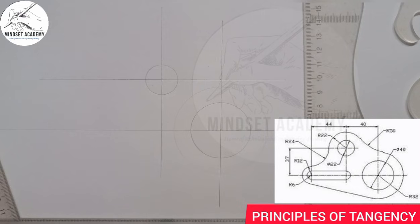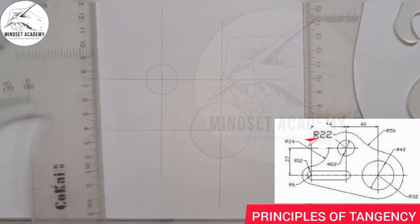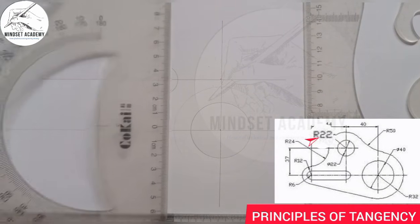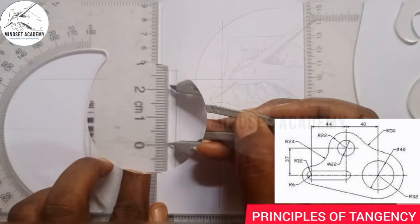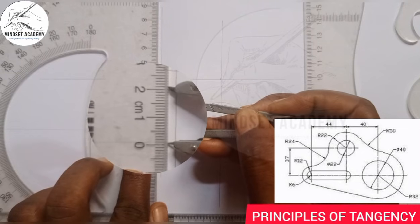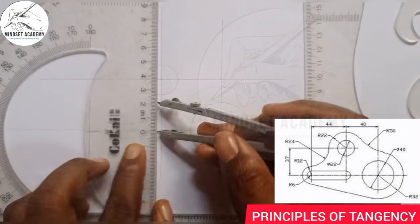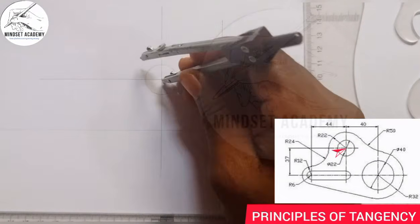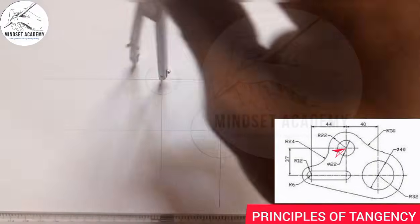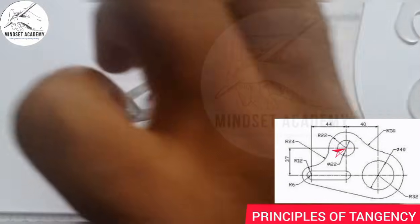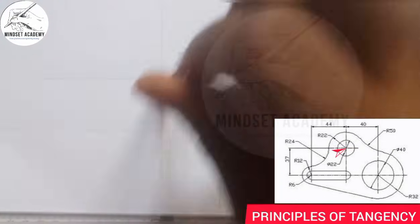There's a bigger circle there, but it's not complete, and it has a radius of 22 from that same center. So I'm going to measure 22 — from 0, that's 20, 21, 22 — place it on the center, and draw a circle with a faint line, since it is not complete.